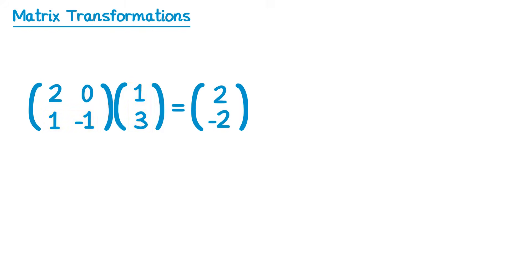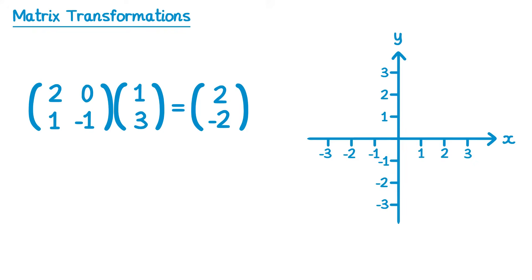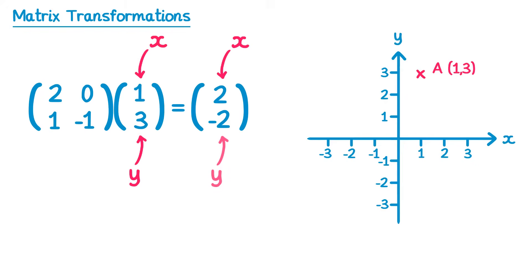When we're looking at matrix transformations, we want to imagine that each of these 2 by 1 matrices represents a coordinate. So if we look at the matrix 1 3, imagine the top number, the 1, is an x coordinate, and the bottom number, the 3, is a y coordinate. Then we've got the coordinate (1, 3) — let's mark that and call it A. The result of multiplying the two matrices together was 2 negative 2, which gives us coordinate (2, -2). We'll label that A dash.